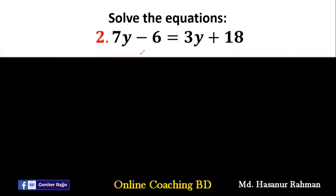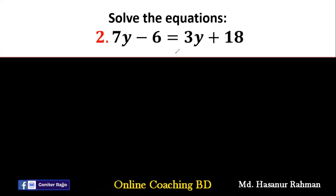Now number 2. Number 2 says solve the equation 7y minus 6 equal to 3y plus 18. So 7y minus 6 equal to 3y plus 18.